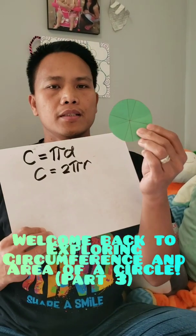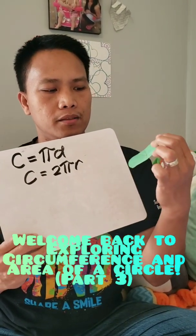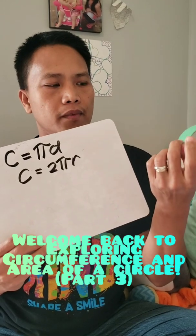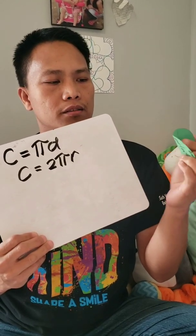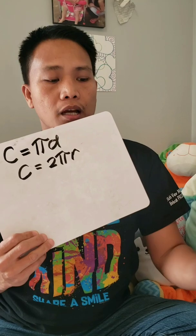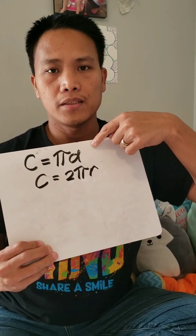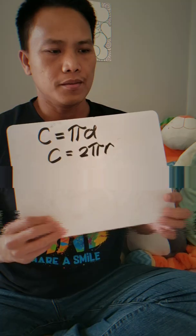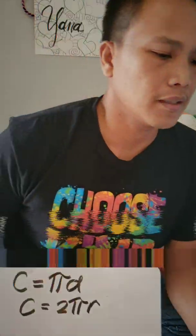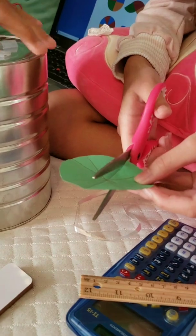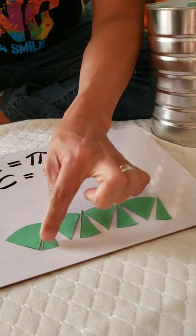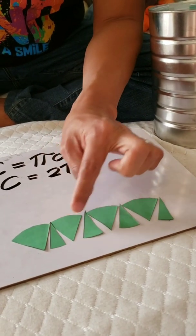So we're going to be using this cutout circle and I'll divide it into eight parts. We will discover how to find the area of a circle using the formulas that we just derived a while ago. So to do that, I'm going to ask Yana to cut the circle into eight parts.